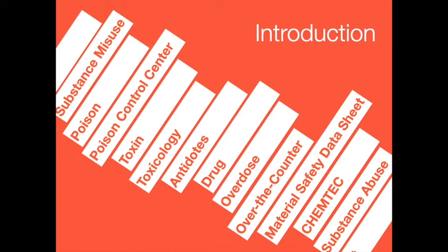In this chapter, you will learn about the four ways poisons can enter the body: ingestion, inhalation, absorption, and injection. You will also learn about the types of poisons in each category, how to recognize signs and symptoms of each type of poisoning, and how to provide care. You will learn when to contact the national PCC hotline or summon more advanced medical personnel. The chapter also covers substance abuse and misuse, types of substances that can be abused, and how to provide care.